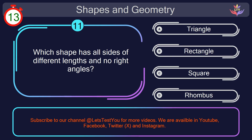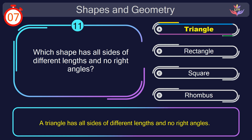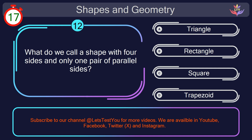Question number 11. Which shape has all sides of different lengths and no right angles? Your countdown started. Here we go. The correct answer is option A. Triangle. A triangle has all sides of different lengths and no right angles.